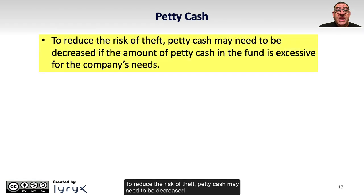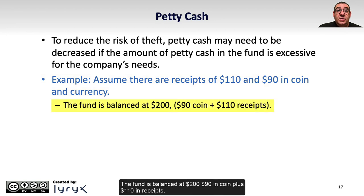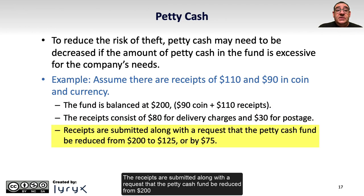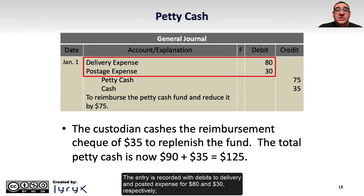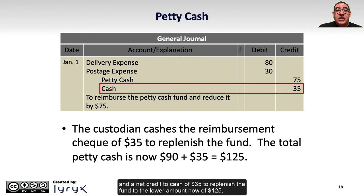To reduce the risk of theft, petty cash may need to be decreased if the amount of cash in the fund is excessive for the company's needs. For example, assume there are receipts of $110 and $90 in coin and currency, with the fund balanced at $200. The receipts consist of $80 for delivery charges and $30 for postage. The receipts are submitted along with the request that the petty cash fund be reduced from $200 down to $125, or by $75. The entry is recorded with debits to delivery and postage expense for $80 and $30 respectively, a credit of $75 to reduce the fund, and a net credit to cash of $35 to replenish the fund to the lower amount of $125.